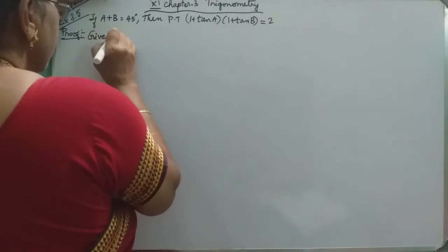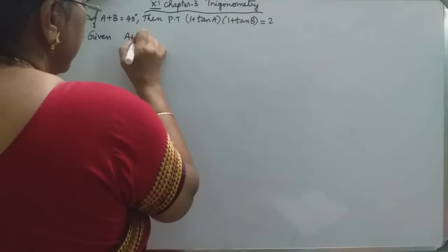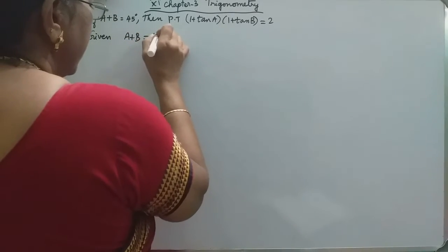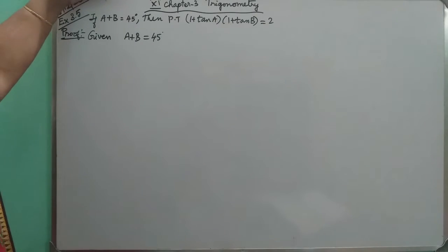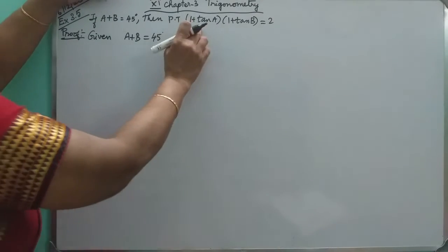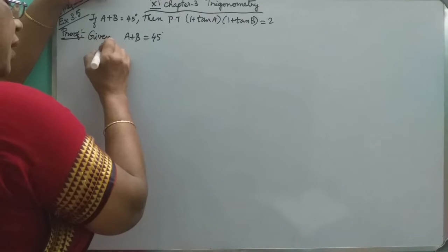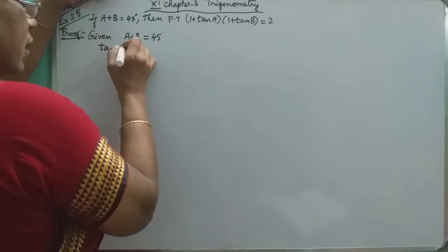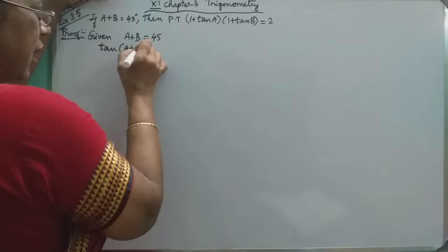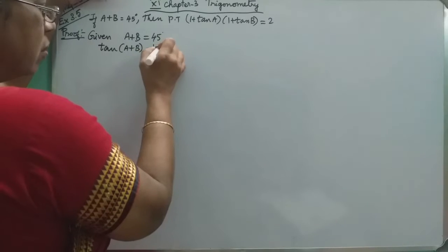Given that A plus B equals 45. A would be one angle, B would be one angle, two angles add to 45. In the problem tan is there, so you take tan on both sides. If you take tan on both sides, tan of A plus B is equal to tan 45.